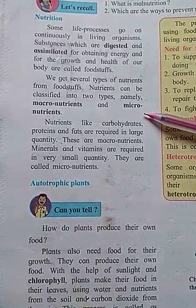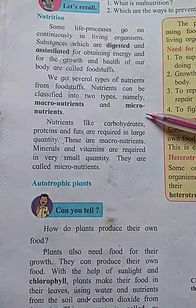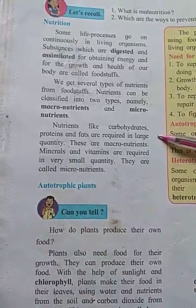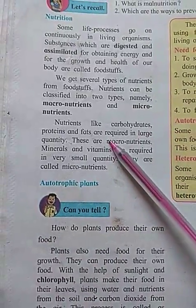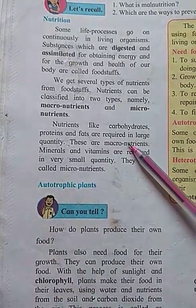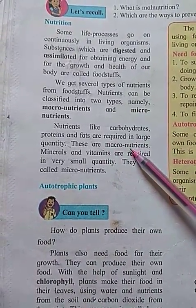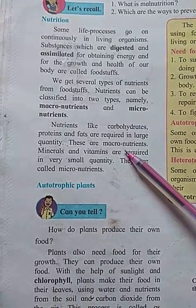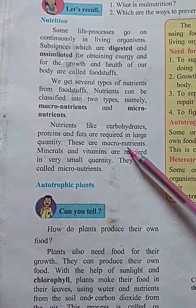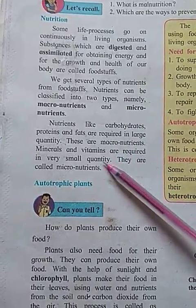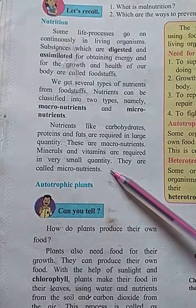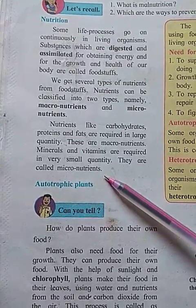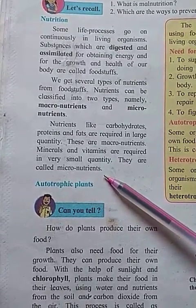Nutrients like carbohydrates, proteins, and fats are required in large quantities — these are macronutrients. Minerals and vitamins are required in very small amounts — these are called micronutrients.